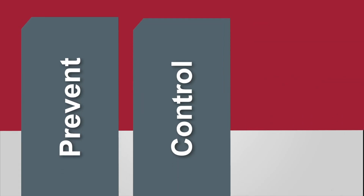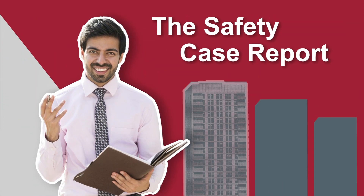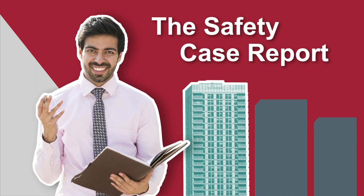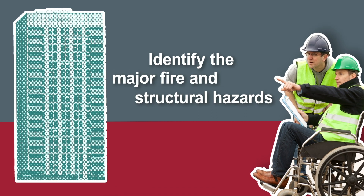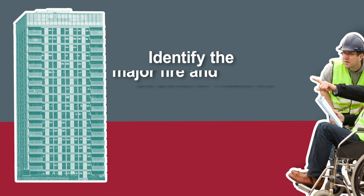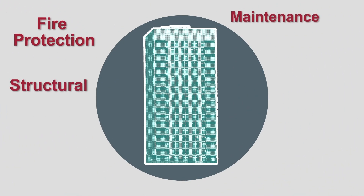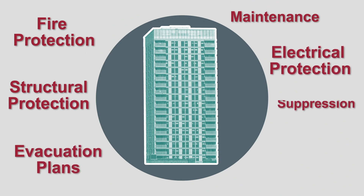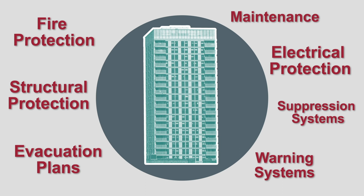Your safety case should identify potentially harmful events and show that you have the necessary measures in place to prevent, control and mitigate risks. The safety case report summarises your safety case and must be tailored to your particular building. It should show the major fire and structural hazards within your building and how you're managing the risks they present, providing confidence that associated risks are being reduced and proportionate steps are being taken to keep them under control and managed in the future.